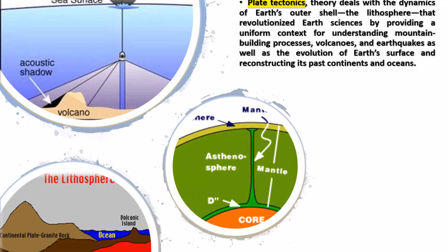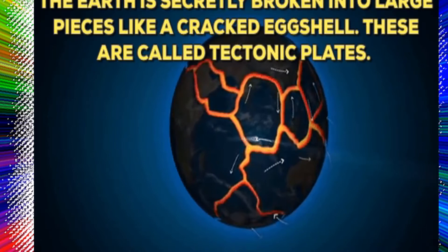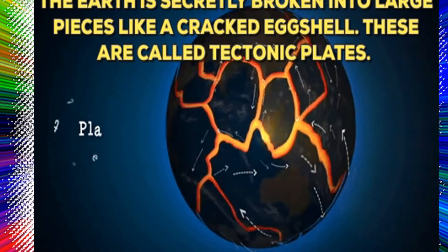As written in Britannica.com, plate tectonics theory deals with the dynamics of Earth's outer shell — the lithosphere — that revolutionized Earth sciences by providing a uniform context for understanding mountain building processes, volcanoes, and earthquakes, as well as the evolution of Earth's surface and reconstructing its past continents and oceans.